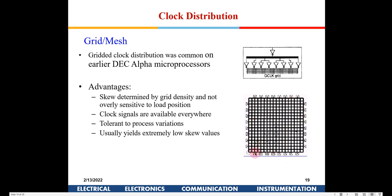In a grid topology, lines run throughout the chip on a higher metal plane with buffers connected throughout. Wherever you require the clock, you use a wire to pull it down to a particular flip-flop. One advantage is that skew is determined by the grid density rather than sensitivity of load position. A coarse grid means more skew; a fine grid means lesser skew.